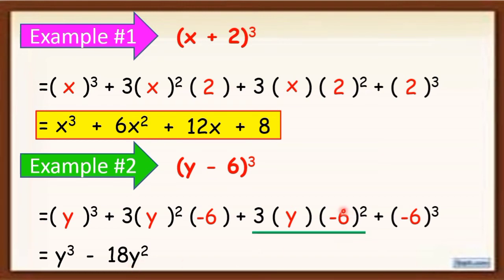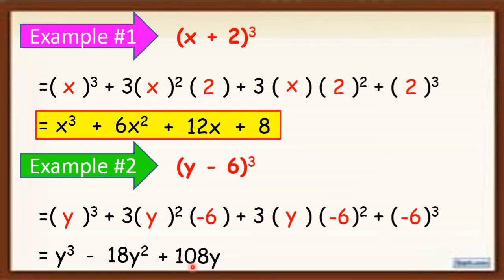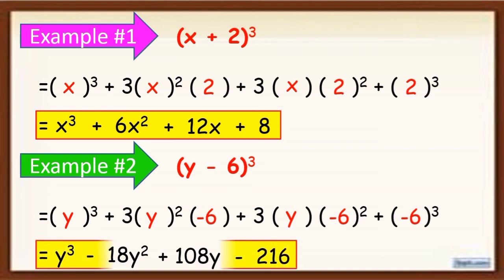To simplify the third term, first simplify negative 6 squared, which equals 36. Then 3 times 1 equals 3, and 3 times 36 equals 108 — don't forget to copy y, giving 108y. Next, negative 6 cubed: negative 6 times negative 6 equals positive 36, and 36 times negative 6 equals negative 216. So the final answer is y cubed minus 18y squared plus 108y minus 216.